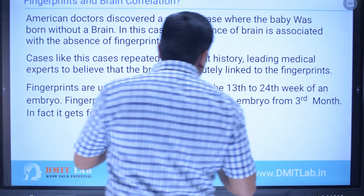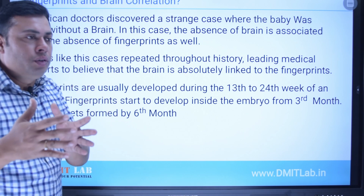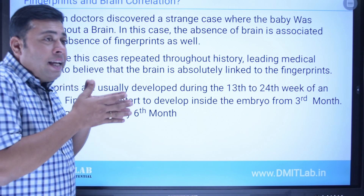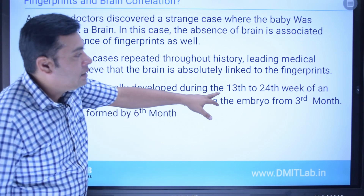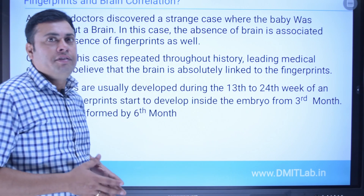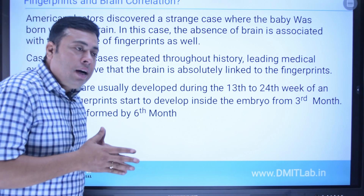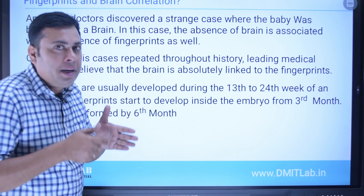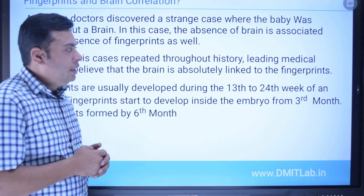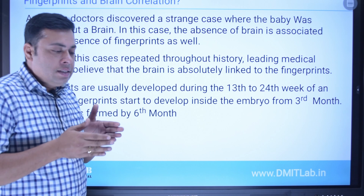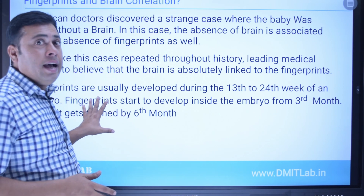Doctors found that from the 13th to the 24th week the brain development starts and completes. The brain is going to be developed starting around the 13th week and will be complete by the 24th week — this is the crucial development period of the brain. Now, fingerprints also start developing at the same time: when brain formation starts, in the same millisecond the development of fingerprints also starts. These are the cases that have been registered.